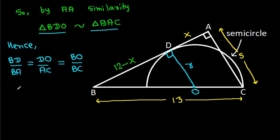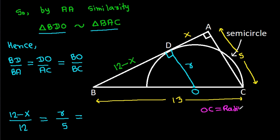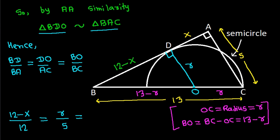BD is 12 minus X, and BA is 12. So we have (12 minus X) over 12 equals R over 5. Also, OC equals R, and BO equals BC minus OC, which is 13 minus R. So BO over BC is (13 minus R) over 13.